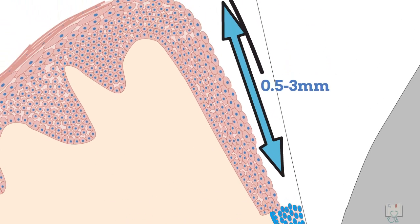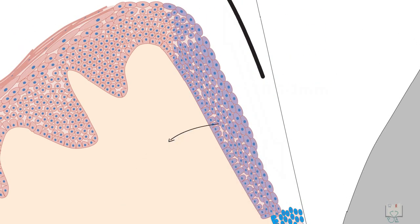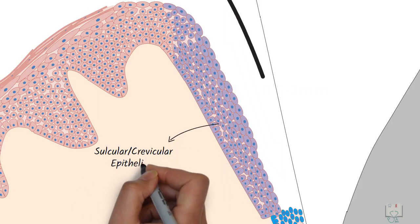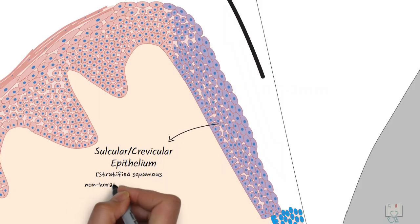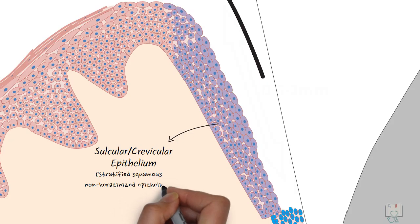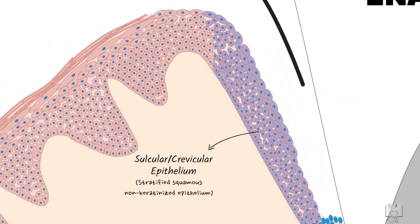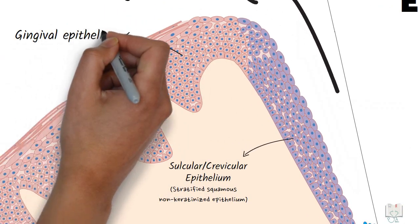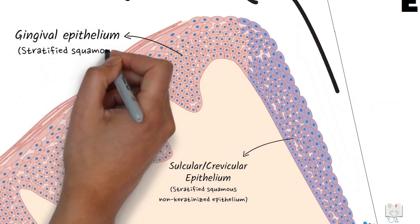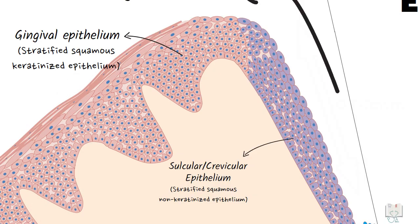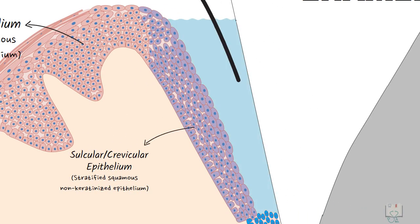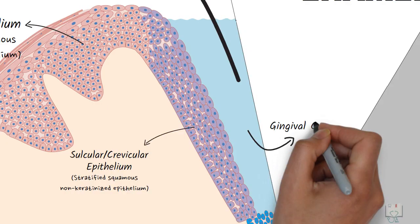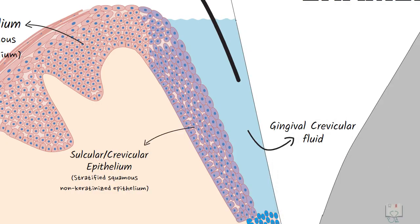The wall of the gingival sulcus is lined by an epithelium called oral sulcular epithelium or crevicular epithelium, which is stratified squamous non-keratinized type. It is continuous with the epithelium of the gingiva, which is stratified squamous keratinized type. The gingival sulcus contains a fluid called the gingival crevicular fluid.